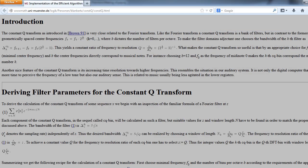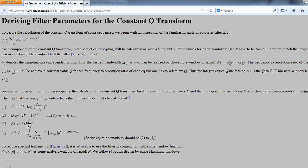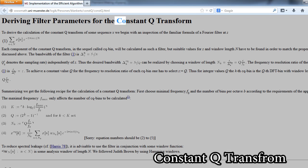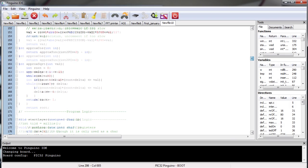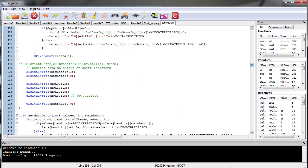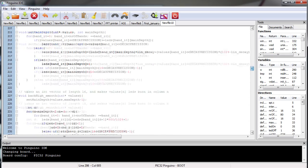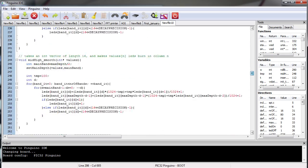The method that is used in this project to calculate the frequencies is the constant Q transform, which is often used in music applications. The method takes into account the exponential relationship between the notes and converts it into a linear relationship, making it easier to divide the notes through different bands. All the algorithms, including the constant Q transform, are written in C and programmed on the microcontroller.